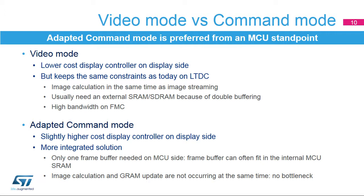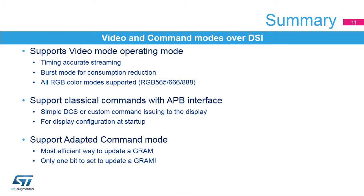Adapted command mode requires a display with a graphics RAM. The display may have a slightly higher cost, but most displays smaller than 480 by 480 pixels embed a graphics RAM. As a consequence, adapted command mode with a small display will not always require an external RAM, as the frame buffer may fit in the internal MCU RAM. This highly reduces bandwidth issues on the MCU and reduces the overall BOM cost and solution integration, as no external RAM is required. The DSI-Host supports video mode operation with timing-accurate streaming, burst mode to reduce consumption during blanking periods, and several RGB color encoding formats to optimize bandwidth usage.